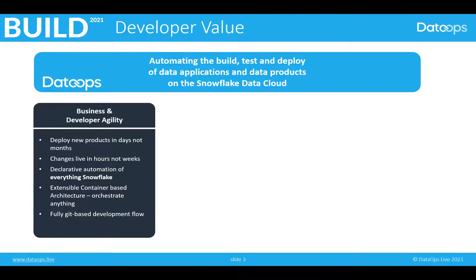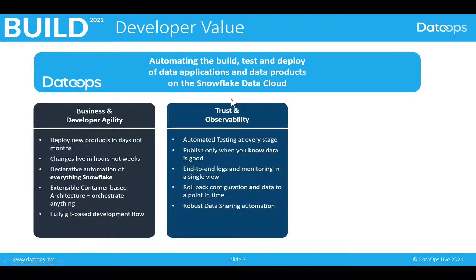We also need some extensibility. We have an extensible container-based architecture so that we can orchestrate absolutely anything inside the data ecosystem or even outside. And finally, to get a really good developer experience and to enable full developer agility, we have to fit in with what people are used to in terms of tools and processes. So we have a completely standard Git-based development flow. The second bucket that's important to developers is trust and observability — trust because they need to trust the data, and observability because this is a relatively complicated ecosystem when we look at all the different tools that people have, and people want a complete end-to-end observability for it.